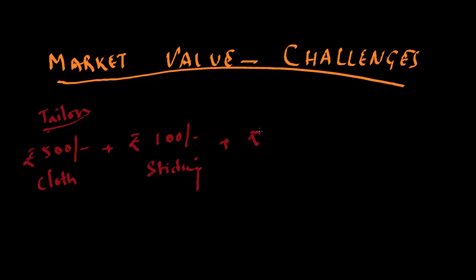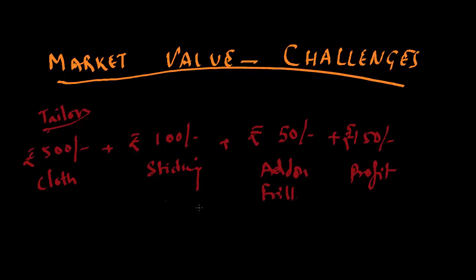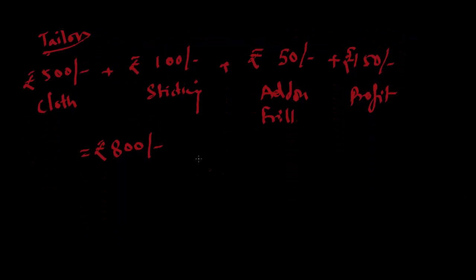Then 50 rupees are for certain add-ons like frill. And they want to make an additional 150 rupees as profit. The total value will come out to be 500 plus 100, that is 600, plus 50, that is 650, plus 150, equals 800. The total value of the dress would be 800 rupees.